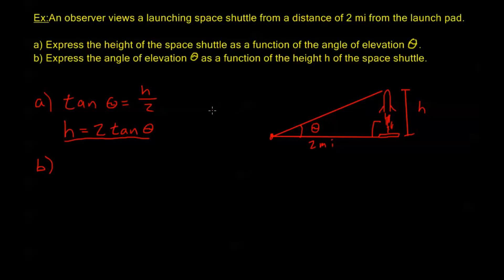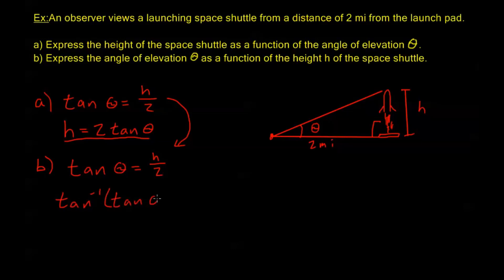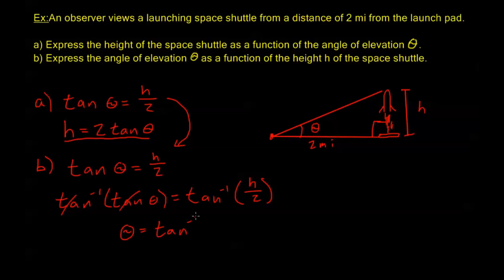For part b, we want the exact opposite: express the angle of elevation theta as a function of the height h. Starting again from tangent of theta equals h over 2, we take the inverse tangent of both sides: tangent inverse of tangent theta equals tangent inverse of h over 2. To confirm we can use the cancellation law — looking at this triangle, we already have a right angle in the bottom right corner, so theta is at least 1 degree and at most 89 degrees, which is within the restricted domain for tangent. So we cancel and get theta equals tangent inverse of h over 2.